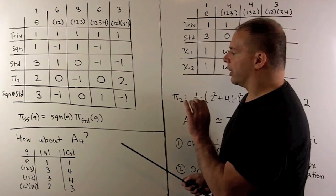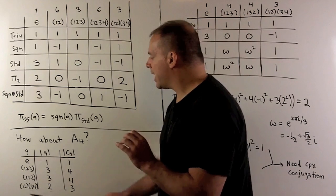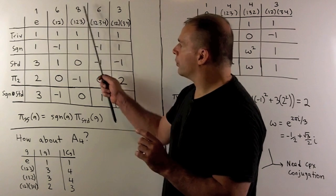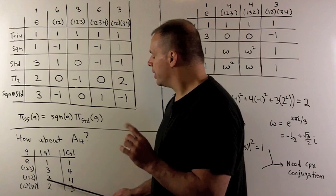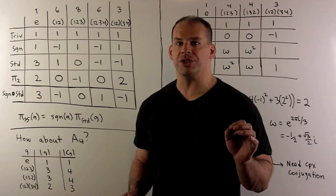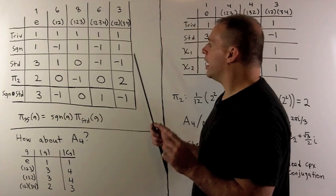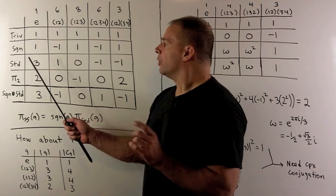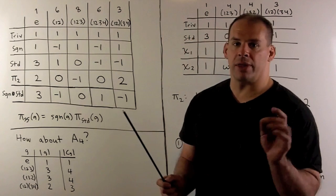Now we consider the character table for A4. We first sort out the conjugacy classes — there are four. The identity is one class; three-cycles split into two classes; and the product of disjoint two-cycles stays together. Four conjugacy classes means four irreducible representations. Taking the representations for S4 and restricting: we always have the trivial representation. Restricting the sign representation to A4 just gives the trivial representation, so nothing new comes from that.